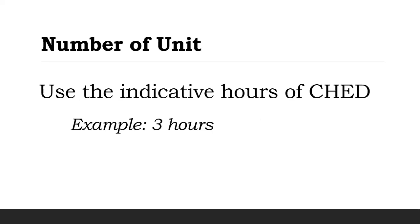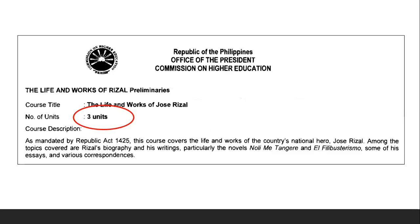For the number of units, use the indicative hours of CHED — what's indicated on the CHED syllabus. You can reduce or increase the hours since they are only indicative. For example, for Rizal, you can make it five hours — no problem. But if you lessen the hours to two, that's also fine as long as you can justify why. In this case, the Life and Works of Rizal has three units.